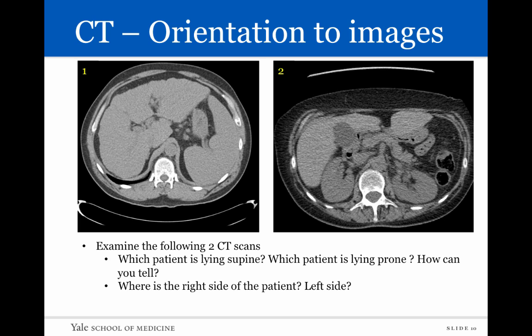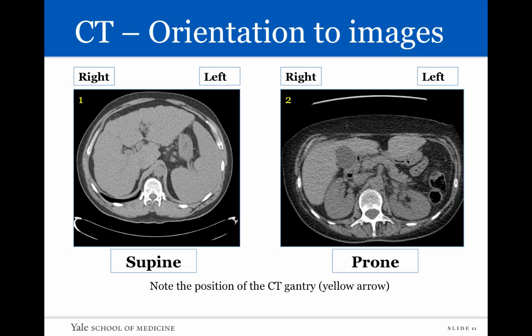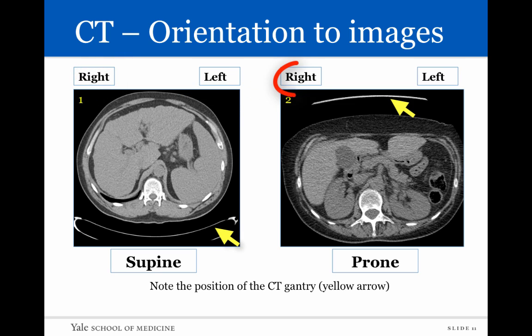Patient number one is lying supine — the CT gantry is above and the table is below, and the patient's back is lying on that table. Patient two is lying prone, with the patient's front facing down on the same table. By convention, the right side is on this side and the left side is on the other. This convention does not change when the patient is lying prone — right side and left side remain the same.